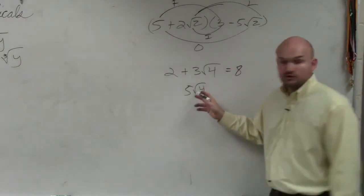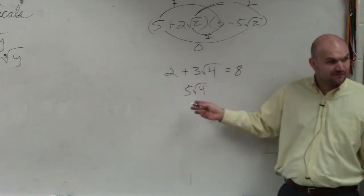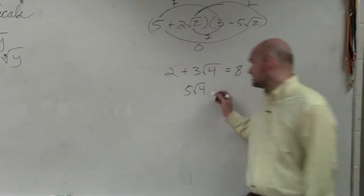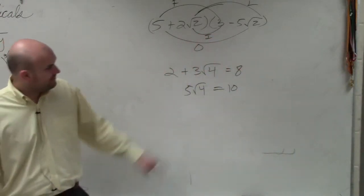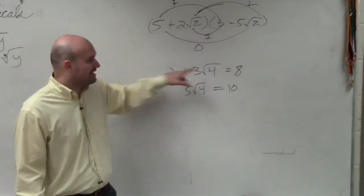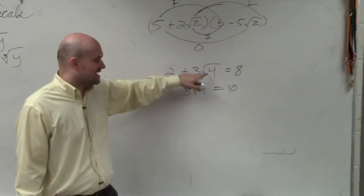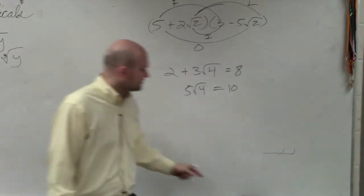8. If you do it this way, add the 2 and the 3, you get 5. Square root of 4 is 2. 2 times 5 is? 10. Do you see how they do not equal each other? So the correct part, you cannot combine these, because this is attached to the square root. This one's not. All right?